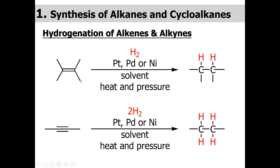When we treat alkene or alkyne in the presence of a catalyst, keep in mind this reaction proceeds in the presence of a catalyst. Generally the catalysts used for the hydrogenation of alkenes and alkynes are platinum, palladium, or nickel.